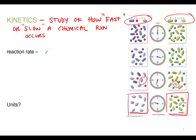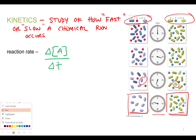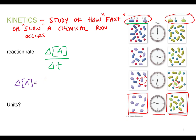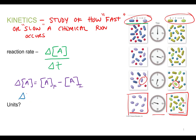The reaction rate is the change in concentration — we'll use the symbol delta. If we're looking at the first reaction, we're looking at the change in concentration of A over the change in time. That calculation would be done the same way as any change: the final concentration minus the initial concentration, and for the change in time, final minus initial.